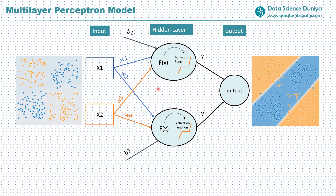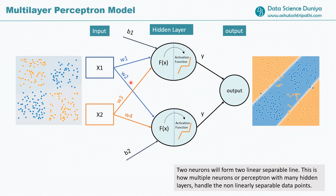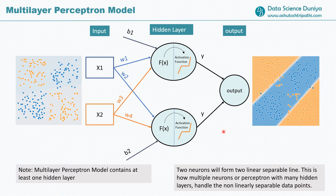In this video I just want to give the intuition of how data flows in the multi-layer perceptron model. In the next video I will show step by step how weights are calculated. Two neurons form two linear separable lines — this is how multiple neurons with many hidden layers handle non-linearly separable data. The multi-layer perceptron contains at least one hidden layer, and can have more than one.